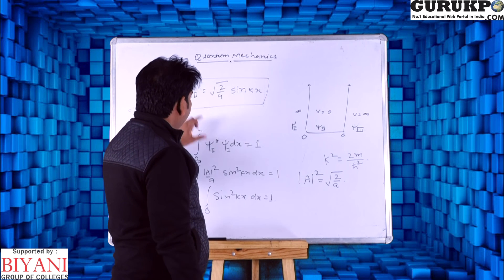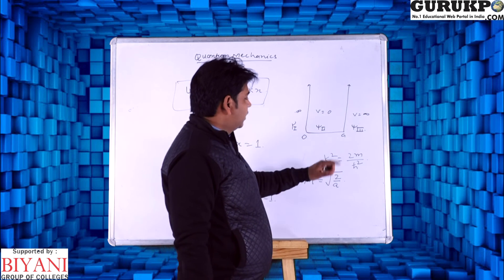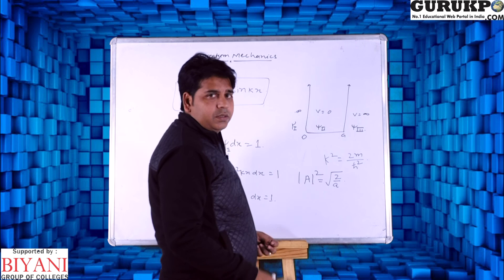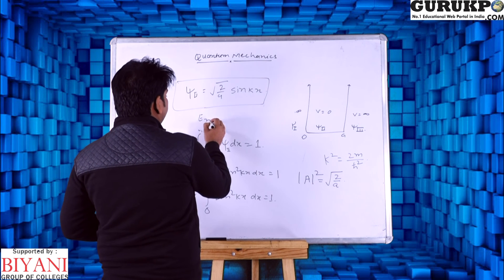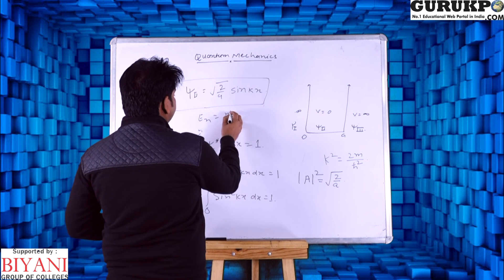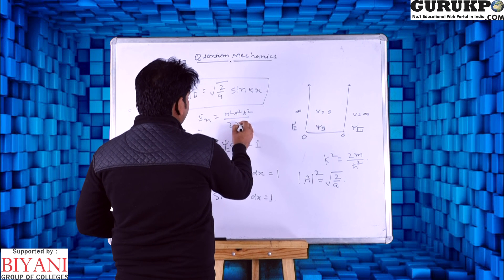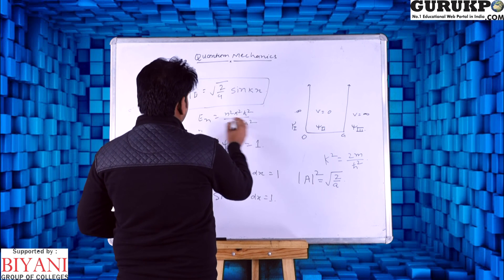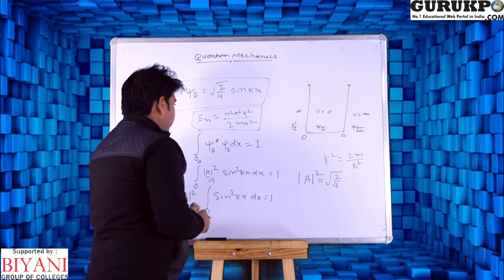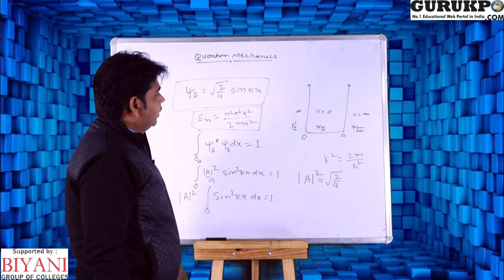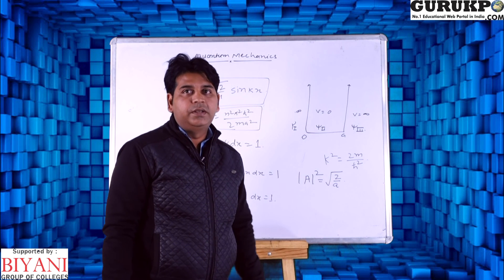So our final wave function is psi 2 equals root(2/A) sin(kx). On this basis, the energy eigenvalue of the system is E_n equals n squared pi squared H-bar squared by 2mA squared. This is the energy eigenvalue for the infinite potential well.